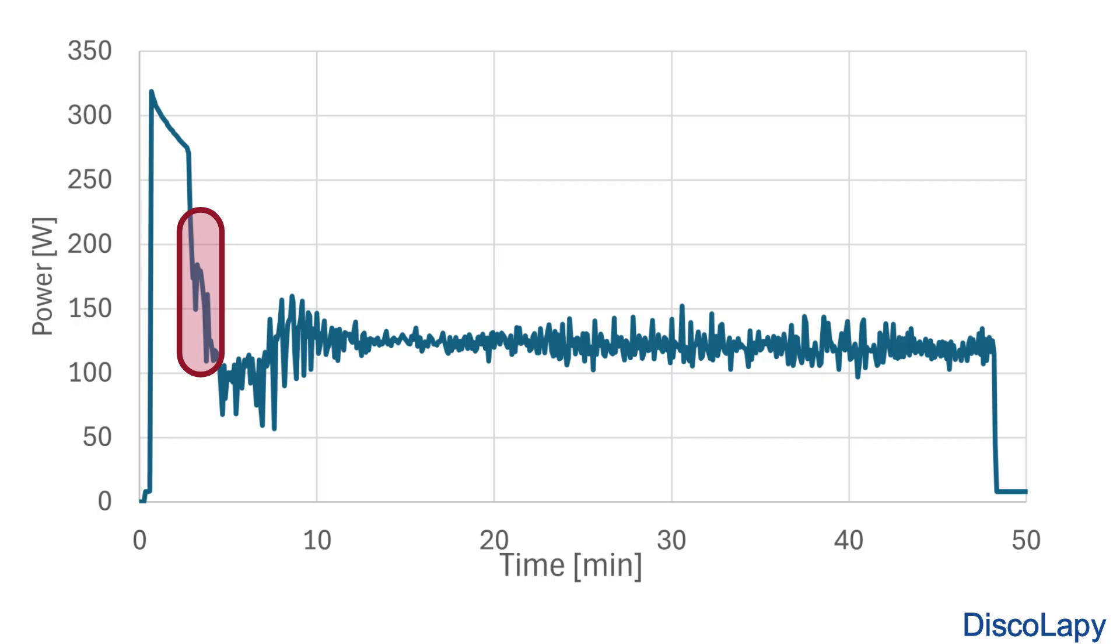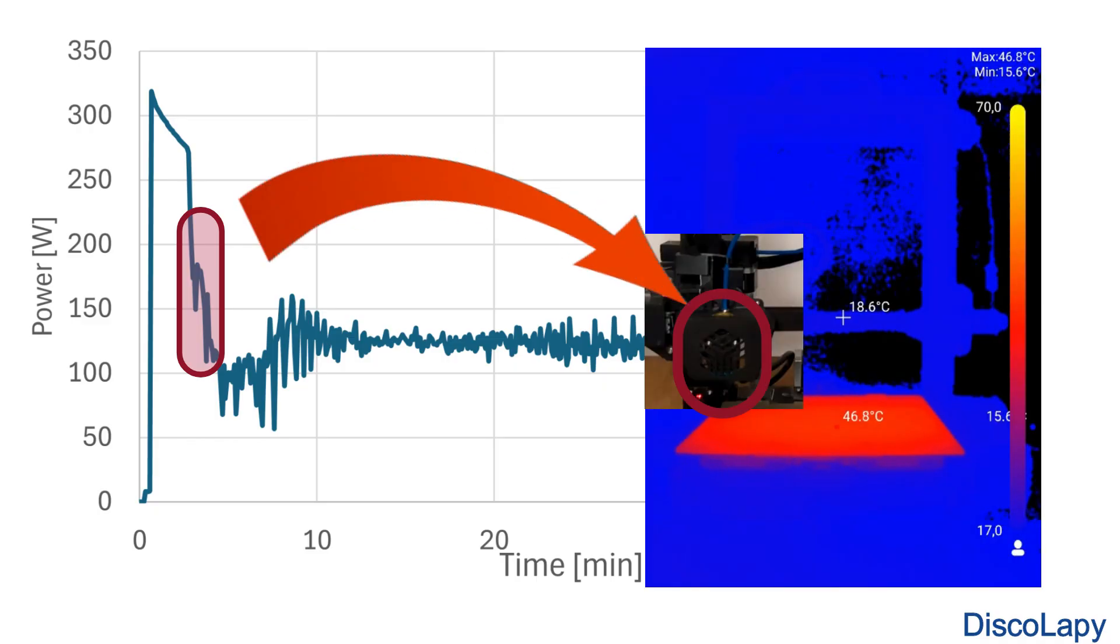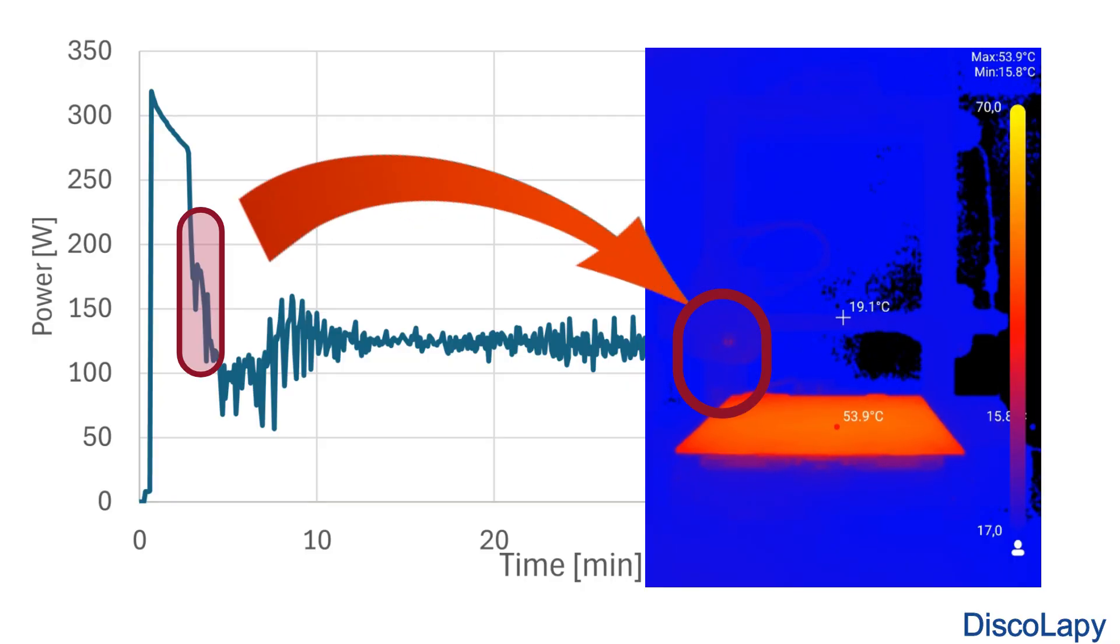Once the heated bed reaches about 60 degrees, the controller reduces the power and the hot end heats up. Because the hot end is relatively small and well insulated, we don't see another peak in the power draw and it reaches 200 degrees in roughly 90 seconds.